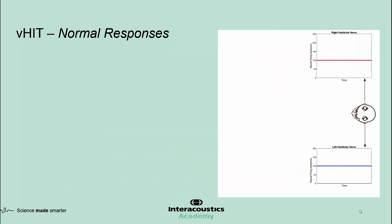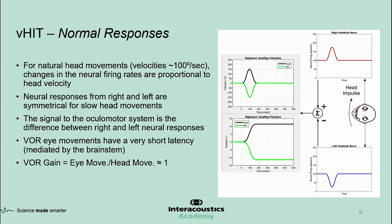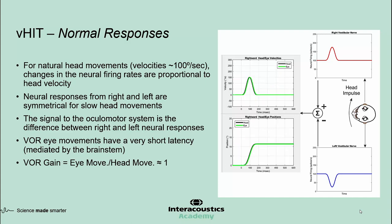For natural head movements — velocities within about 100 degrees per second — changes in neural firing are proportional to head velocity but in opposite directions. The signal to the oculomotor system is the difference between the right and left neural responses. VOR movements have a very short latency because they are mediated by the brainstem without higher-level brain involvement. The head and eye movements are about the same and the VOR gain is approximately equal to one.